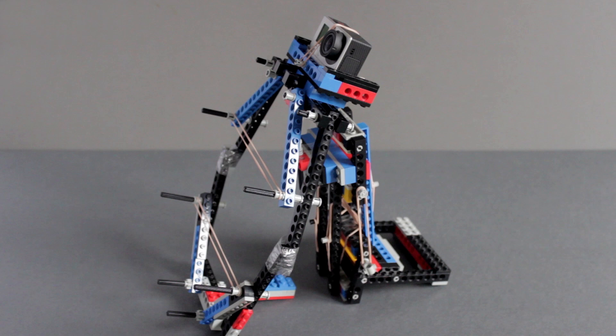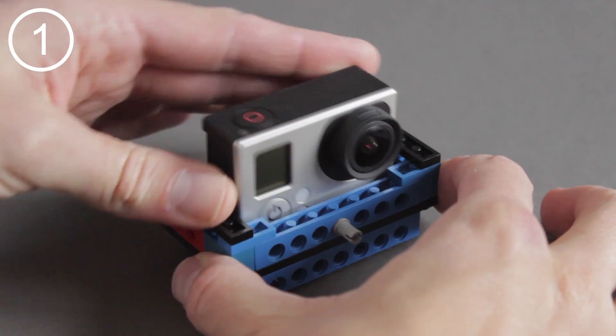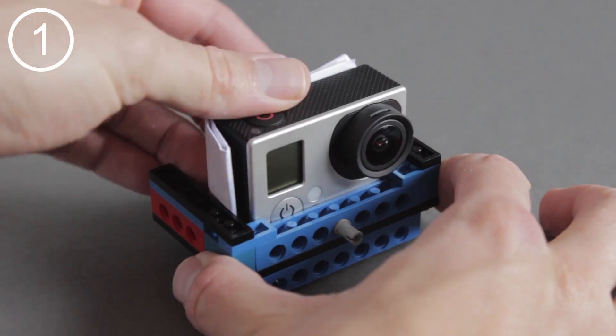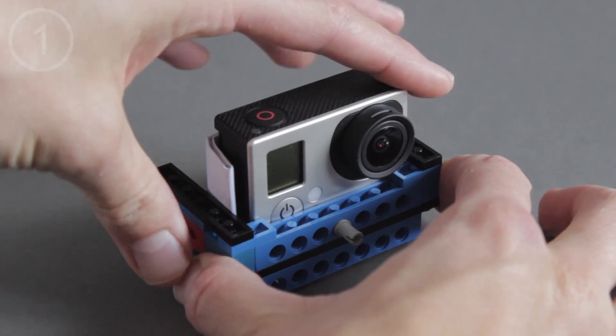There are three parts to my system: the GoPro holder, the balancing arms, and the tensioning system. The holder cradles the GoPro camera, and I've used folded paper and an elastic band to hold it securely in place.